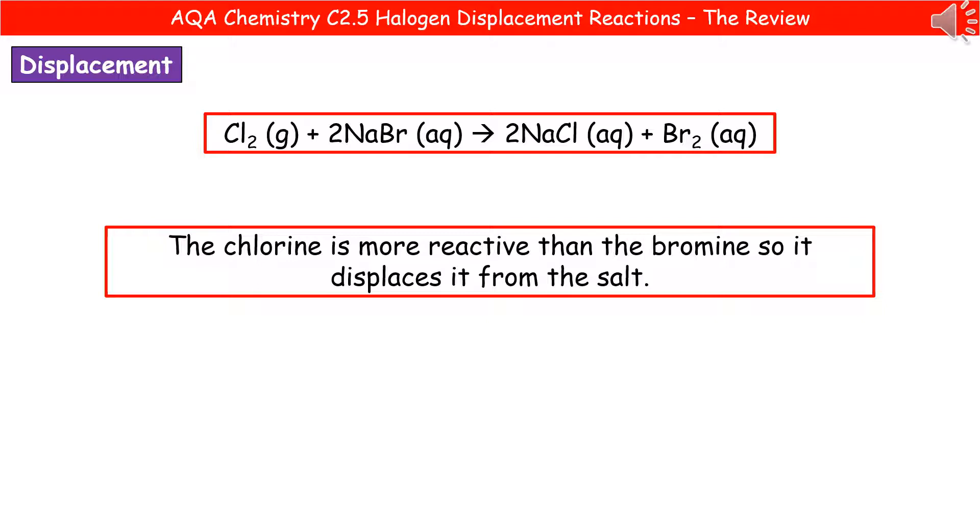And again, the reason that we see this is because chlorine is more reactive than bromine, so it will displace it from the salt. If we were to have been given the sodium chloride reacting with bromine on its own, then we'd see nothing and it would form the sodium chloride and bromine. So it wouldn't change anything because bromine is less reactive than chlorine, so it wouldn't possibly displace it from the halide.